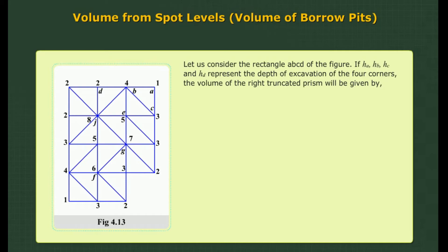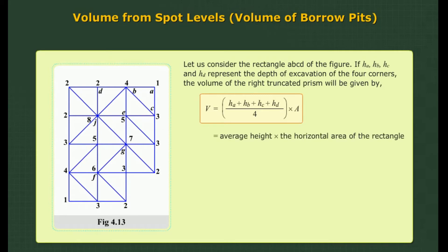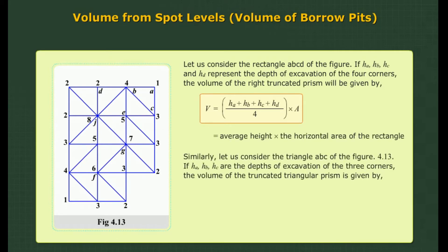The rectangle ABCD represents the horizontal projection of the upper inclined base of the prism and also the lower horizontal base. If HA, HB, HC and HD represent the depth of excavation of the four corners, the volume of the right truncated prism will be given by V = A(HA + HB + HC + HD)/4. Similarly, for triangle ABC, if HA, HB, HC are the depths of excavation of the three corners, the volume of the truncated triangular prism is given by V = A(HA + HB + HC)/3.